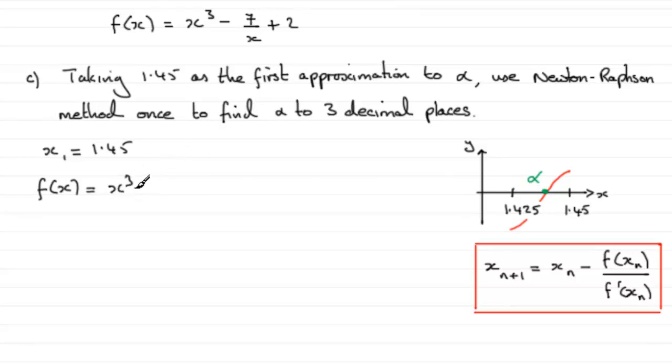We can change this to minus 7x to the power of minus 1 plus 2. So if we differentiate this, f dash of x is going to equal 3x squared plus 7x to the minus 2, or 7 over x squared. And the 2 obviously differentiates to 0.